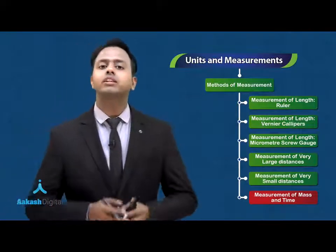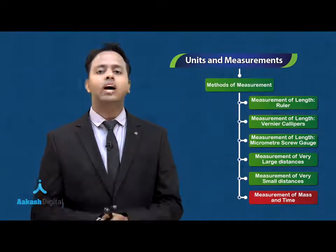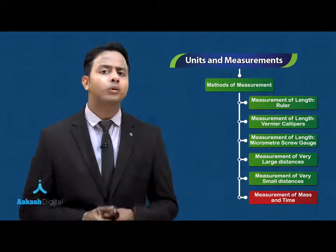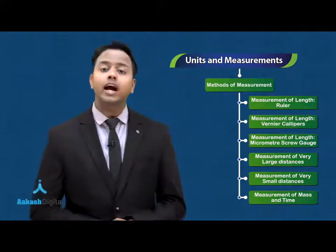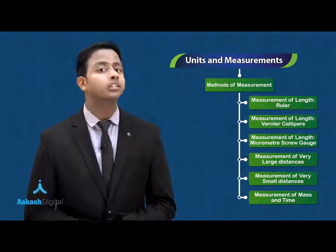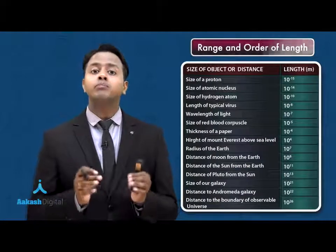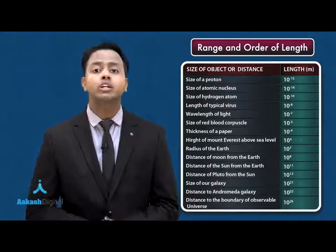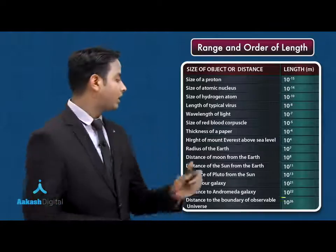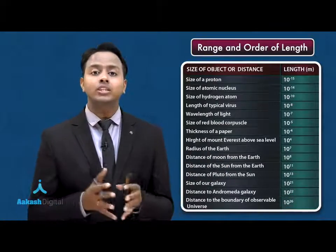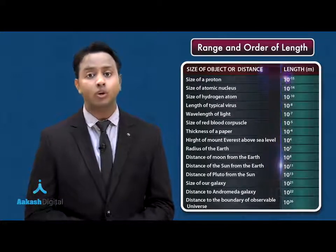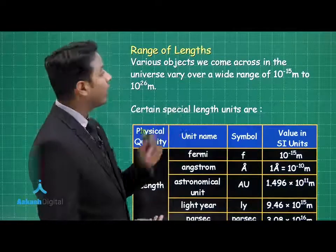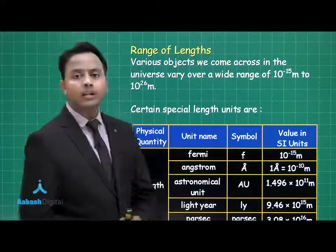In the previous segments we have seen different methods to measure small and large-scale distances, and the different principles we can employ depending upon the experiment's requirements. Now it's time to generalize all the ranges of length in the universe. The minimum size starts from the size of a proton, which is 10 to the power minus 15 meters, and extends up to the observable universe boundary at 10 to the power 26 meters — a difference of 10 to the power 41 orders.